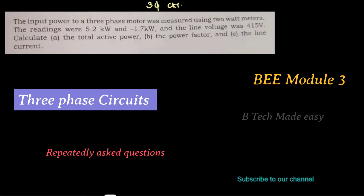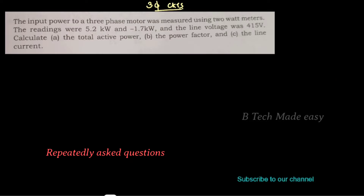Three-phase circuits. Let's do a question. The input power to a three-phase motor was measured using two watt meters. The readings were 5.2 kilowatt and minus 1.7 kilowatt, and the line voltage was 415 volts. Calculate: first, the total active power; second, the power factor of the circuit; and third, the line current.